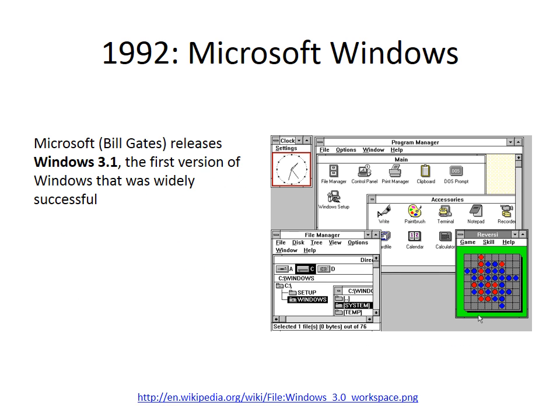Bill Gates had been steadily improving his GUI imitation of the Macintosh for the IBM PC. The 3.1 release of Windows in 1992 was functional enough to become very popular, much to the dismay of Apple. Windows has continued to be very popular, although it looks like things are changing as the PC era is being left behind.